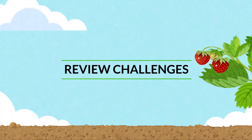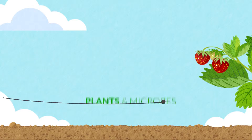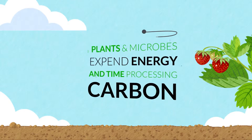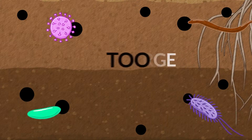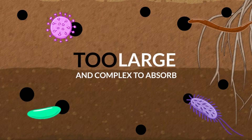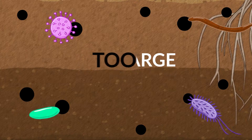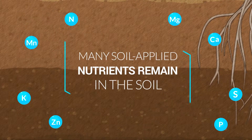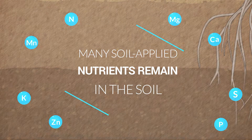So let's review some of the challenges we've discussed so far. Number one, plants and microbes expend a great deal of energy and time processing carbon. Number two, most natural forms of carbon are too large and complex for easy absorption. Number three, many soil-applied nutrients are not effectively taken up into the plant or remain tied up in the soil.